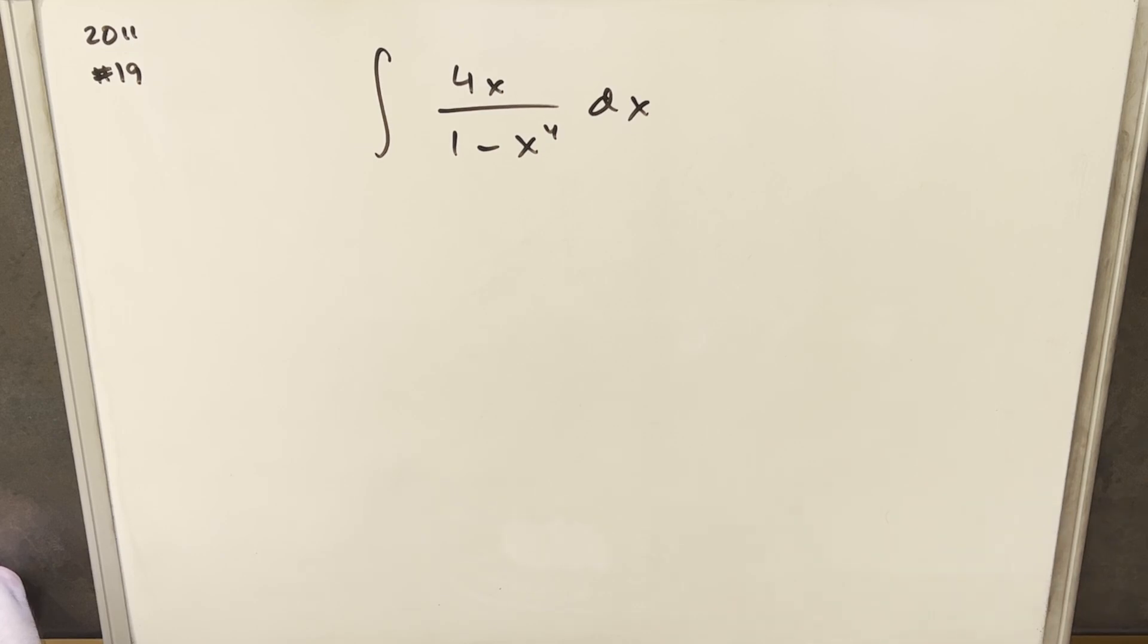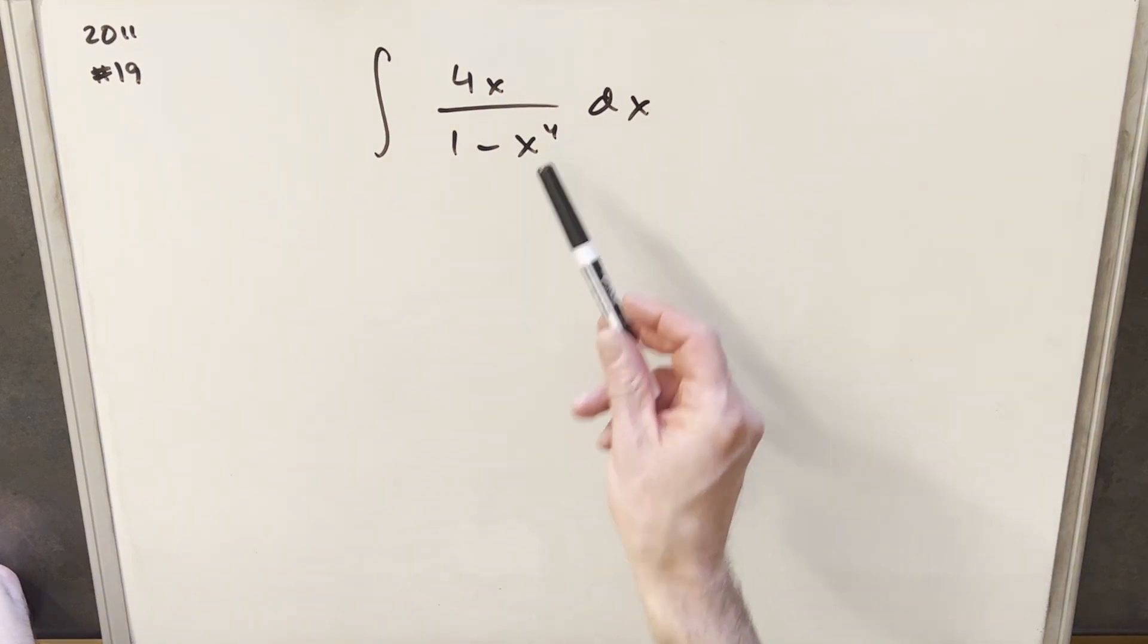We have the integral of 4x over 1 minus x to the 4th dx. The first thing I notice here is that we'd really like, we're used to this being a square. Now with this being a 4th power, that makes it a little different, but we can handle that pretty easily.